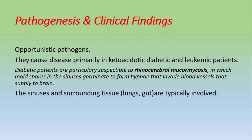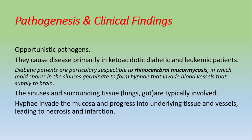Pathogenesis and clinical findings: Mucor and Rhizopus are opportunistic pathogens that cause disease primarily in immunocompromised patients, particularly ketoacidotic diabetic patients and leukemic patients. In diabetic patients, the classic disease is rhino-cerebral mucormycosis — involving the rhino (nasal) and cerebral (brain) areas. Mucormycosis involves invasion of underlying tissues, leading to necrosis and infarction. When the fungus penetrates blood vessels, it causes hypoxia, then ischemia, then necrosis and infarction.